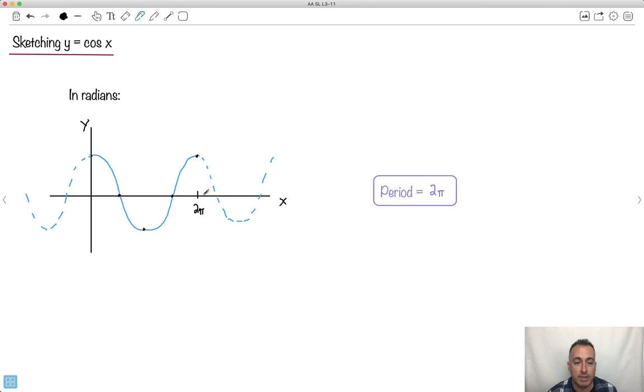So if this is 2 pi, half of that must be right here, and that is pi. And half of that must be pi over 2. And then again I count. 1 pi over 2, 2 pi over 2. This must be 3 pi over 2. And I'm done sketching.